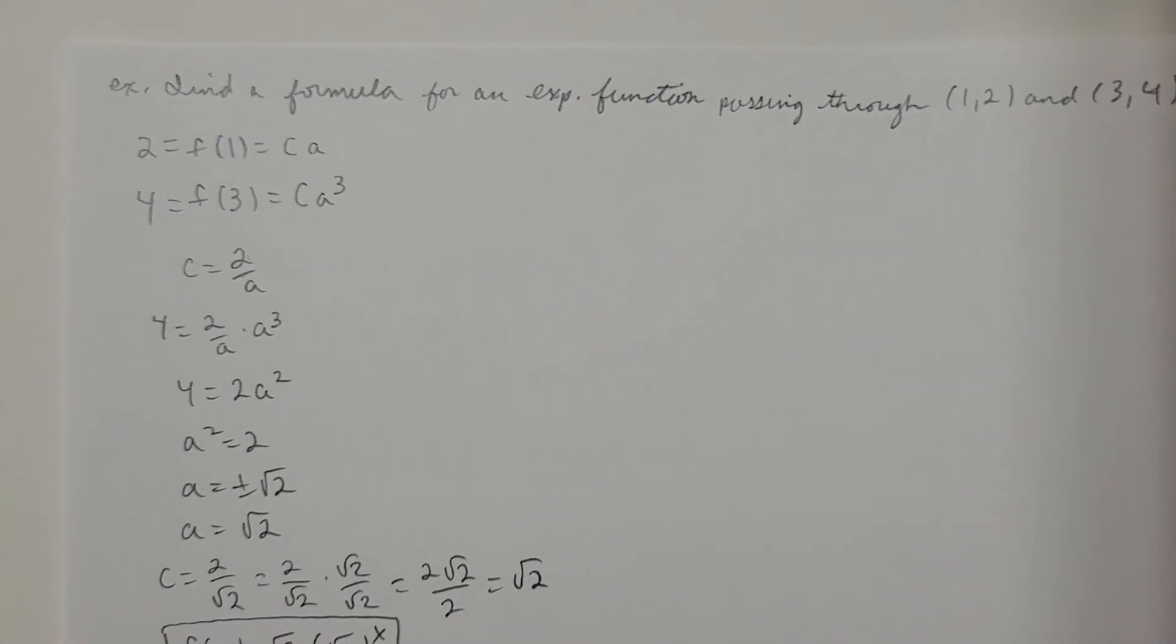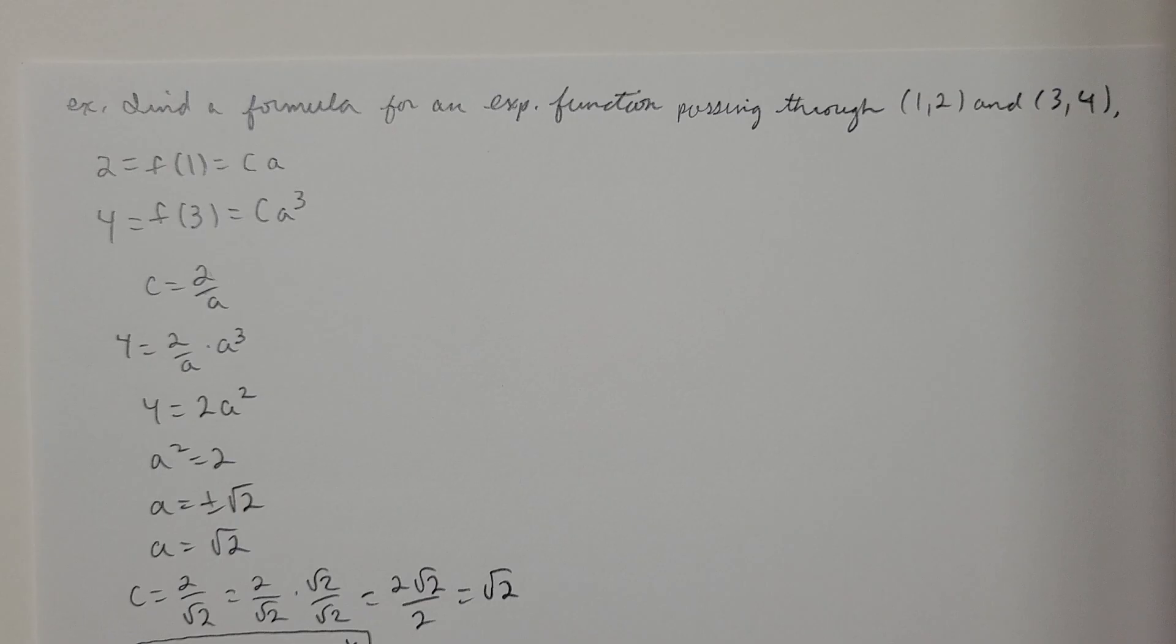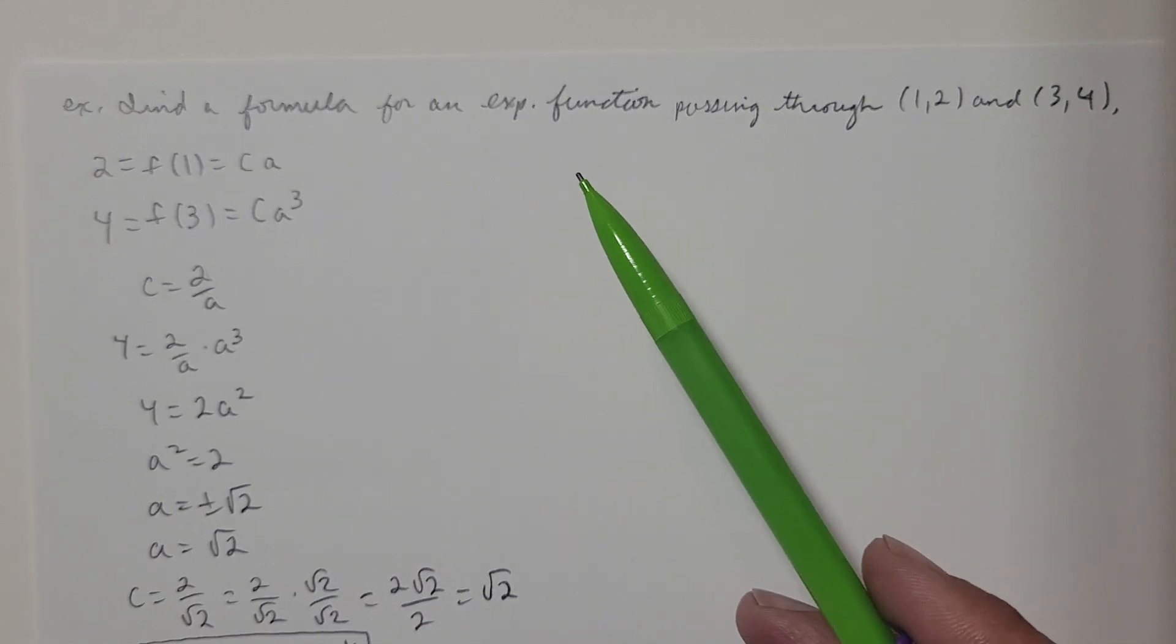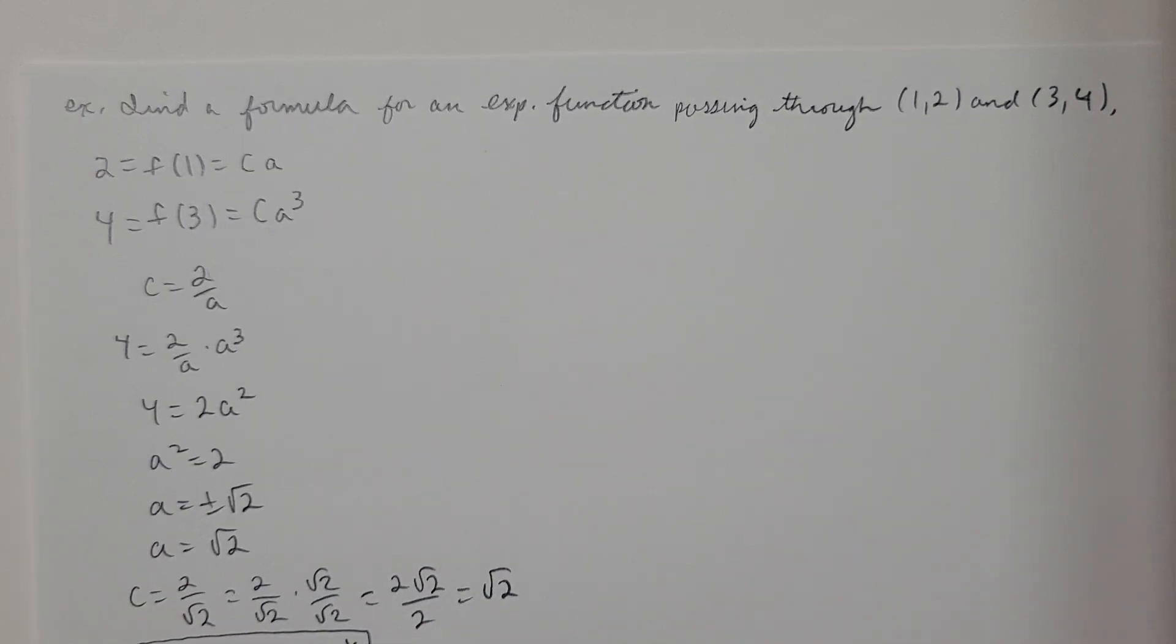Let's try another problem. This would be kind of a similar problem here. They want us to find a formula for an exponential function passing through the points (1, 2) and (3, 4). So 1, 2 means that f(1) is 2. And 3, 4 means that f(3) is 4. Now I want us to find an exponential function. So we need a function in the form f(x) equals c times a to the x.